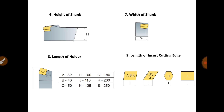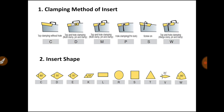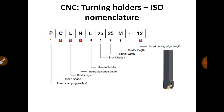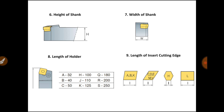The sixth location denotes the height of the shank. The portion in black color is the shank of the turning holder, which has a certain height and certain width. That height and width are denoted by locations 6 and 7 respectively. In our standard designation, 25 and 25 are written, meaning the shank height is 25 mm and the shank width is also 25 mm.